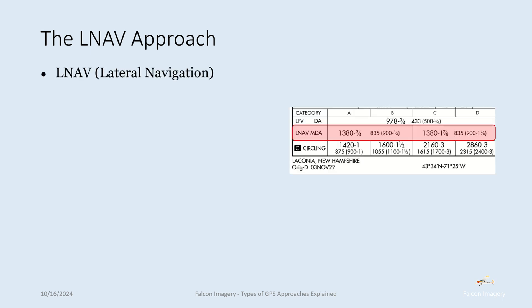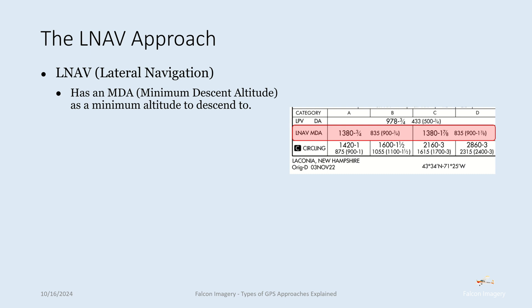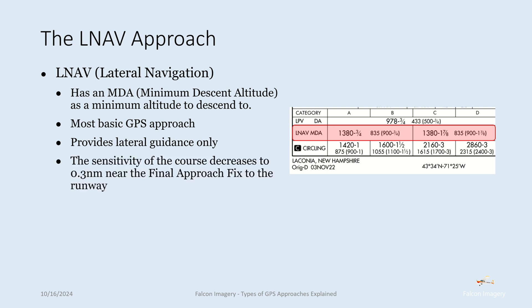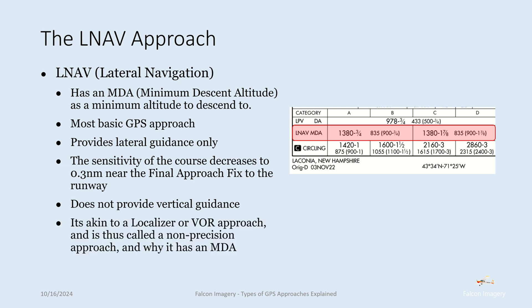We have the LNAV approach. LNAV stands for lateral navigation. It has an MDA, or minimum descent altitude, associated with it — the minimum altitude you can descend to, after which you must see the runway environment. It's your most basic GPS approach, providing lateral guidance only. The sensitivity of the course decreases to 0.3 nautical miles near the final approach fix to the runway, and it doesn't provide any vertical guidance. It's akin to a localizer or VOR approach and is thus called a non-precision approach.